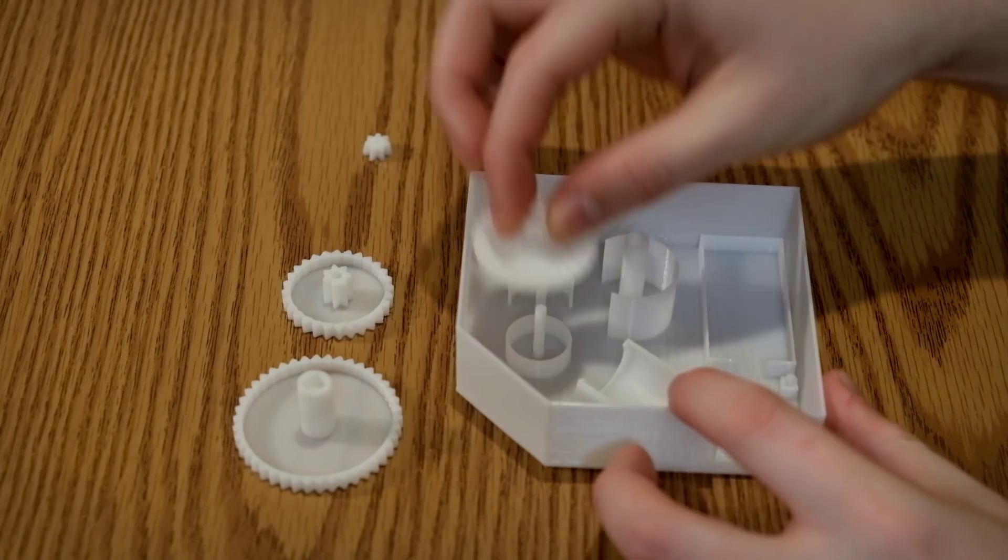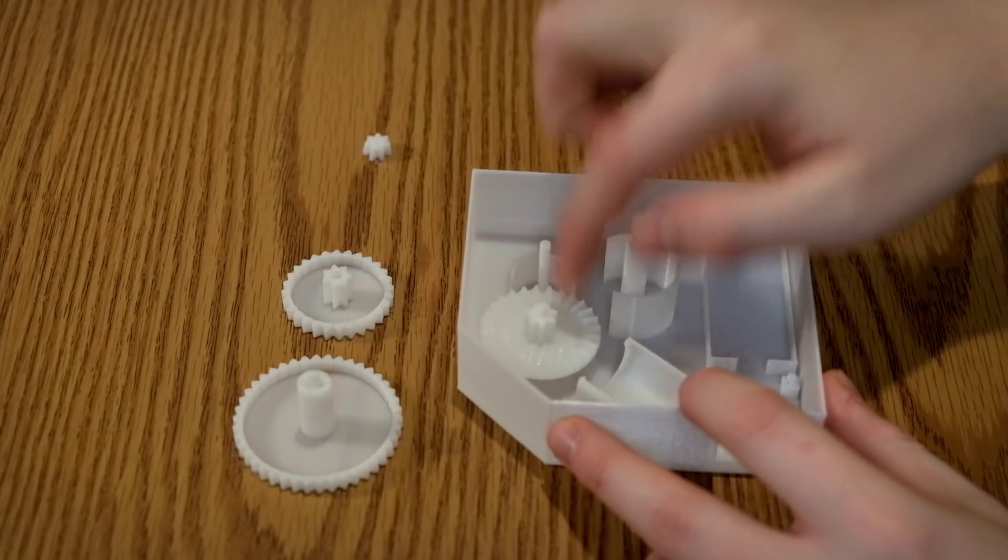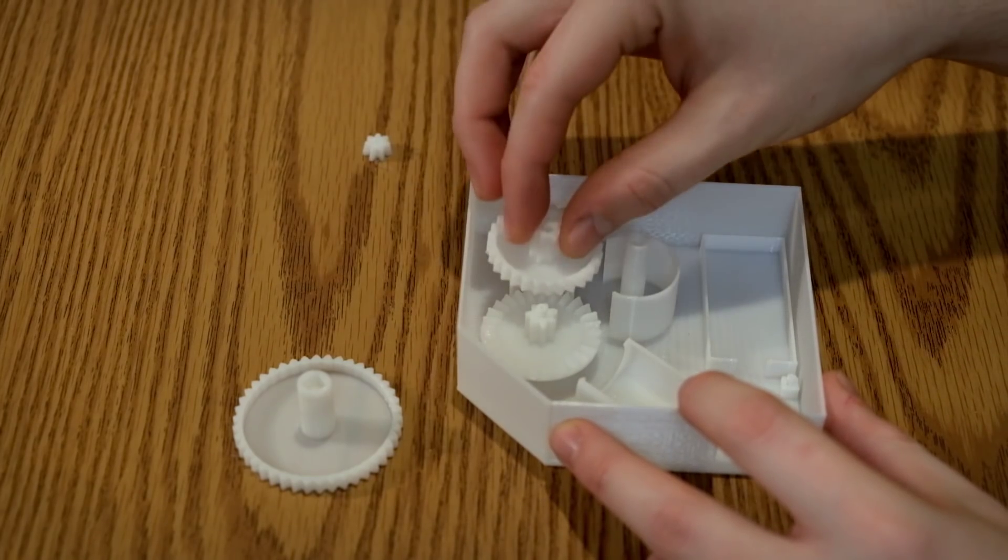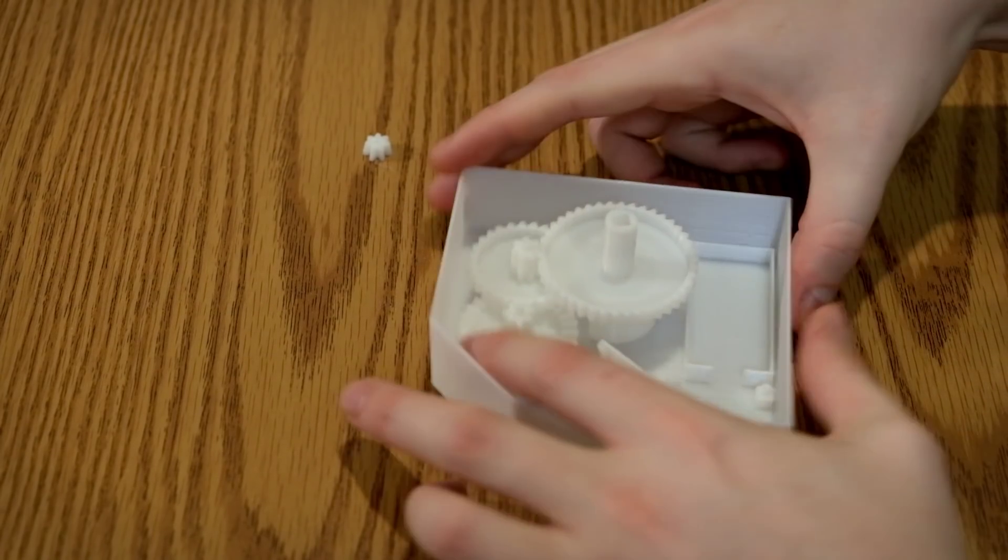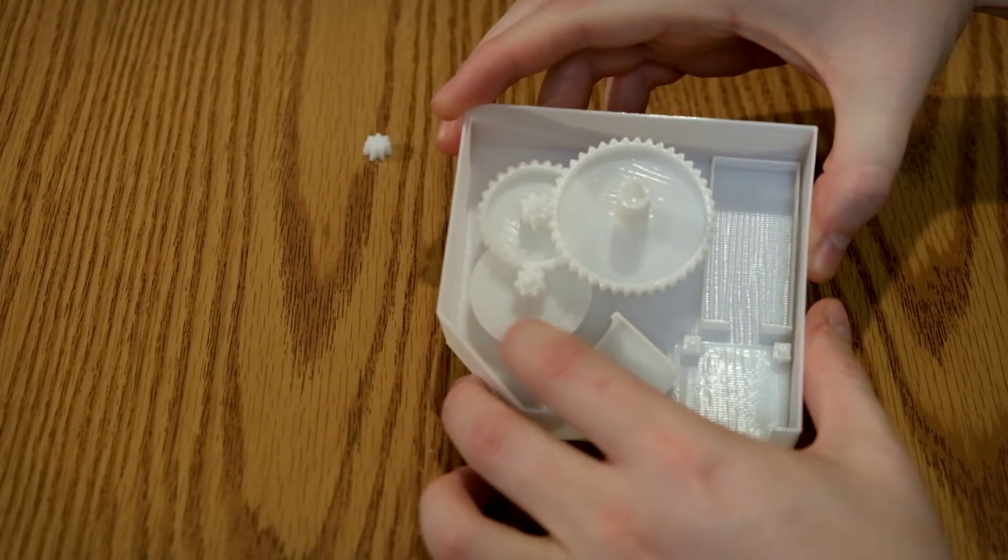Next let's add the gears to the base and spin them to make sure that they fit properly. There should be little to no resistance. And notice how the largest gear rotates slower. There's a reason why we need that to happen.